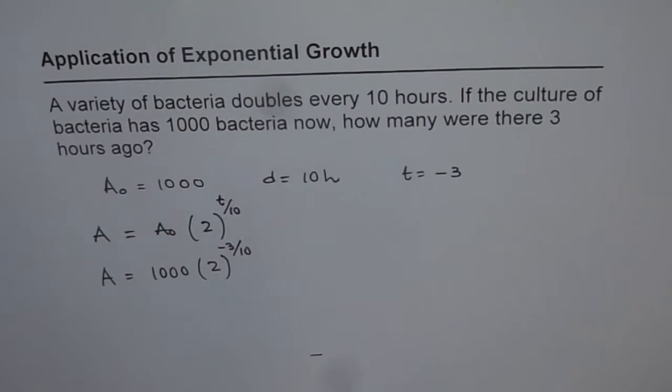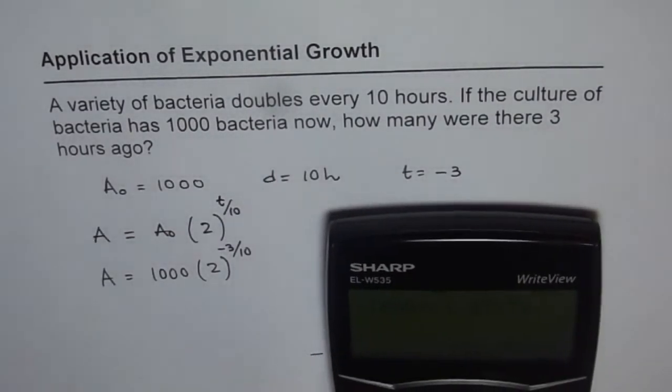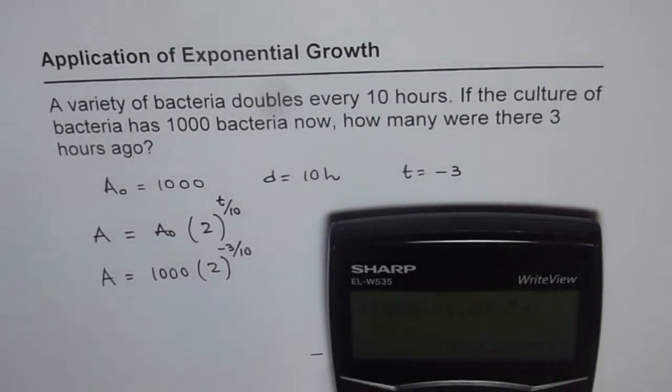Let's use the calculator and figure this out. We have amount equals 1000, bracket, 2 to the power of minus 3 over 10. Within bracket we should write minus 0.3.